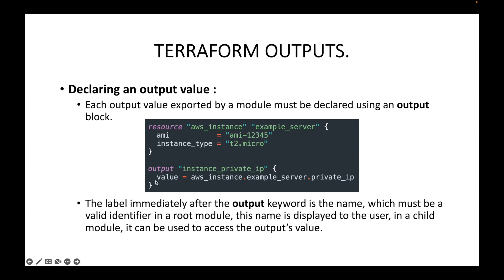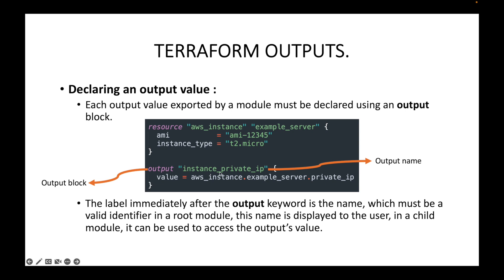Here is how we declare the output block. I am creating a resource block and here I have an output block. We make use of the output keyword, then we use a label name, and then finally specify what value you want to return. This defines your output block. The label name, or output name, must be a valid identifier — this is what will be displayed to the user, and we can use it to access the value.